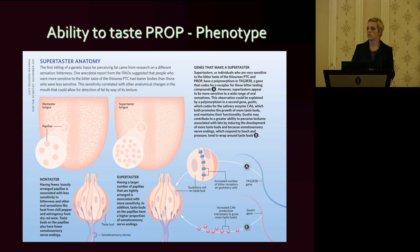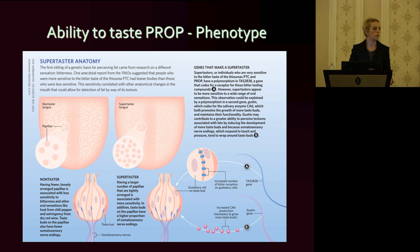I'll talk about some of the work we've done looking at children who are sensitive to a compound called PROP and a related compound called PTC. Both are bitter tasting — very bitter tasting to some people. Linda Bartosz has called these people super-tasters because they have a more dense array of fungiform papillae, or taste buds, on the tongue. Compared to non-tasters who are insensitive to these bitter compounds, they have differences not only in their ability to taste bitter, but also other taste compounds and potentially textural compounds in food.